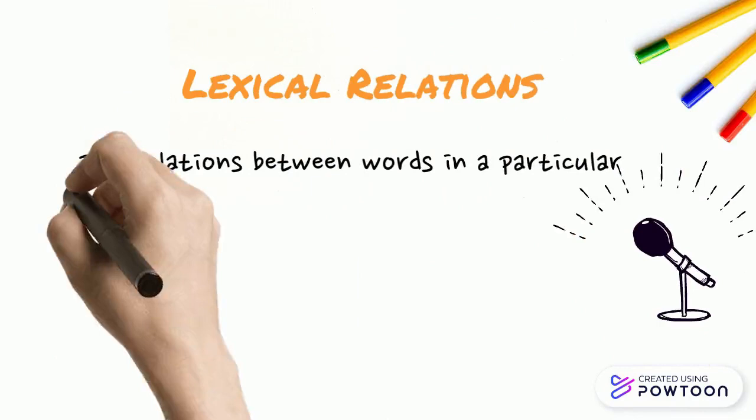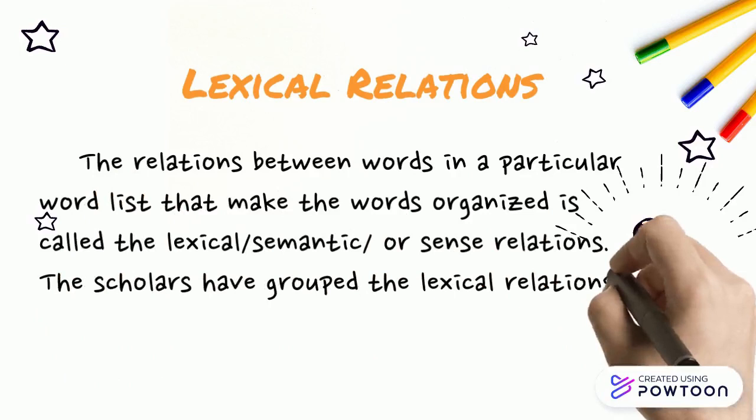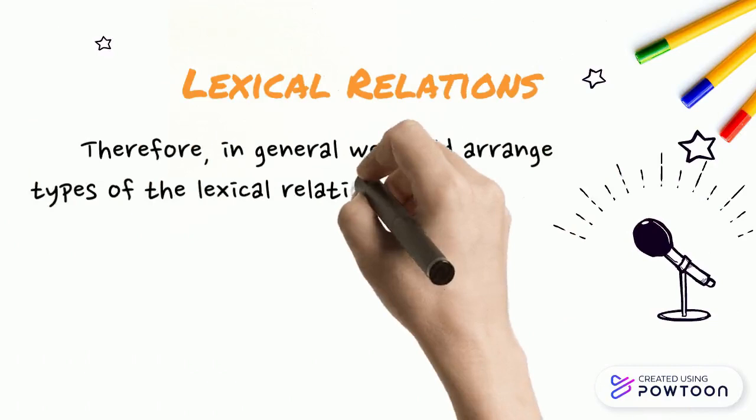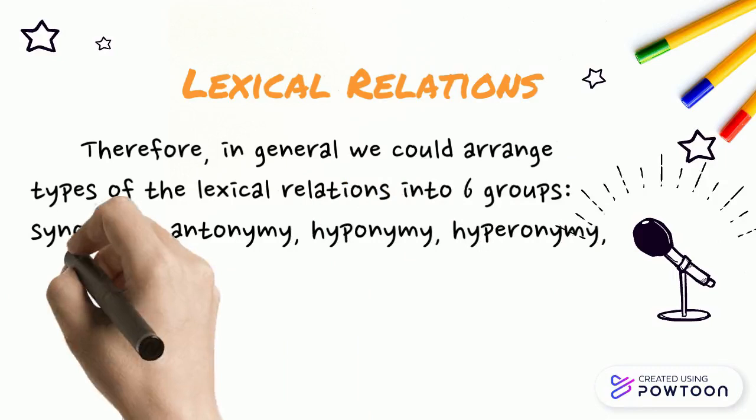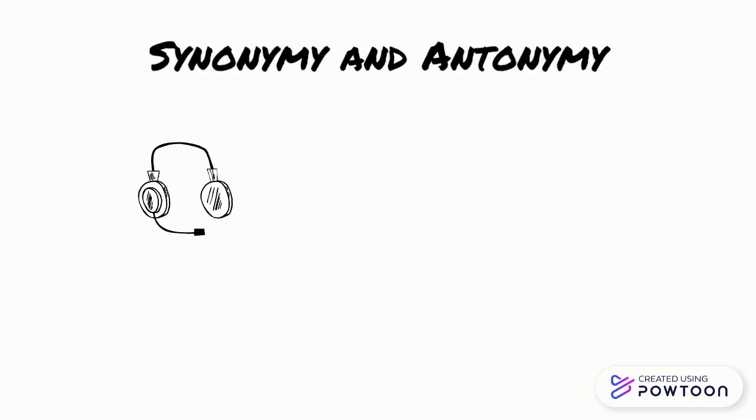The relations between words in a particular word list that makes the words organized is called the lexical, semantic, or sense relations. Scholars have grouped lexical relations into different types. In general, we can arrange types of lexical relations into six groups: synonymy, antonymy, hyponymy, hypernymy, meronymy, and holonymy, which can be matched into three pairs of relations. The first pair is synonymy and antonymy.